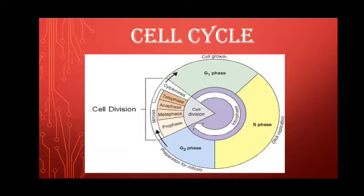In the first growth phase, i.e. G1 phase, RNA and proteins are synthesized and the volume of cytoplasm increases. Mitochondria, in the case of animal cells, and chloroplasts, in the case of plant cells, divide during this phase. These two cell organelles have their own DNA.